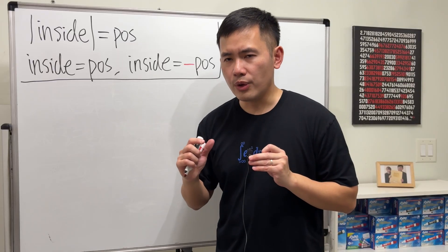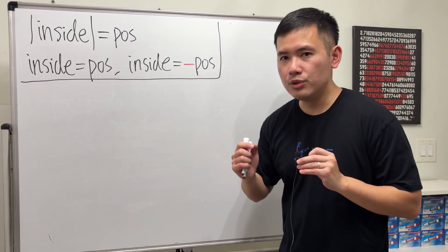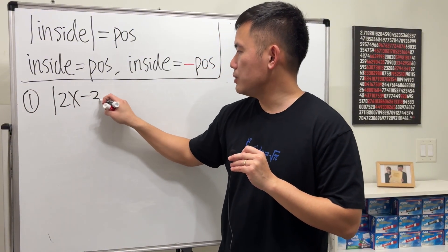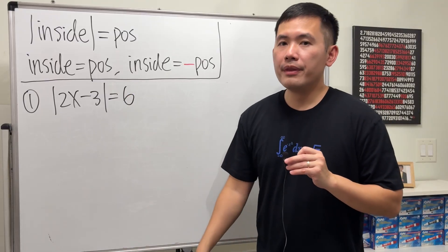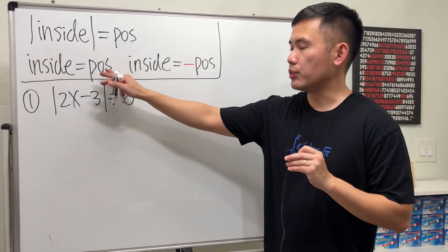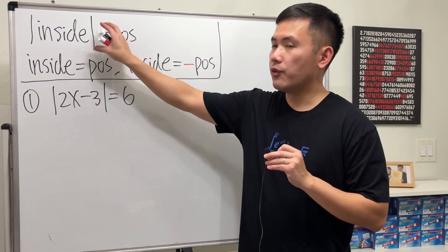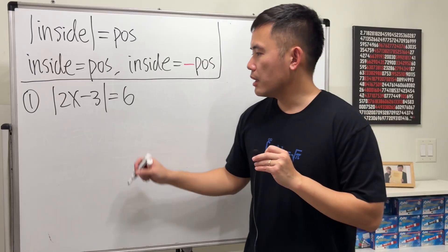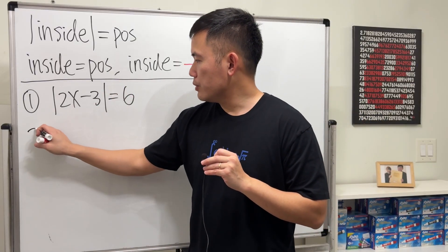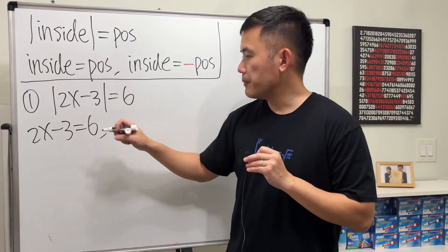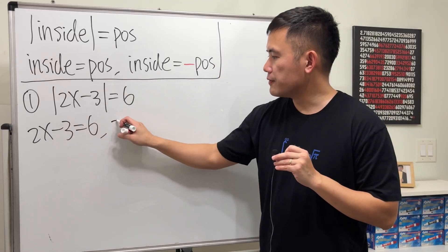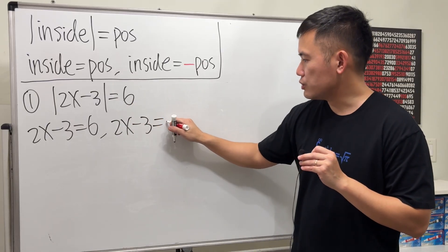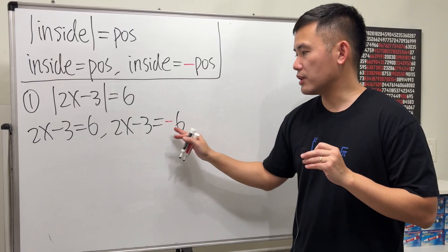Let me give you three examples to make things clear. Example one: suppose we have the absolute value of 2x minus 3 equals 6. We can proceed directly because it's already in the correct form — absolute value of an expression equals a positive number. First equation: remove the absolute value and set 2x minus 3 equal to 6. Second equation: set 2x minus 3 equal to negative 6.